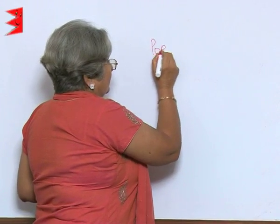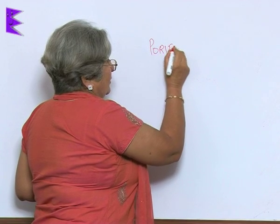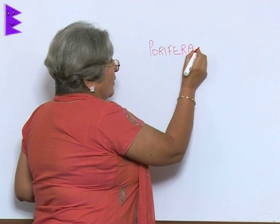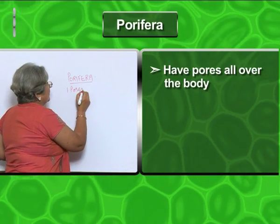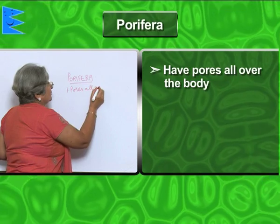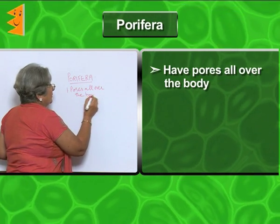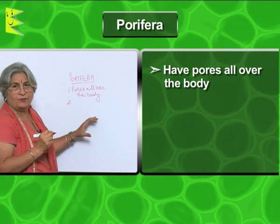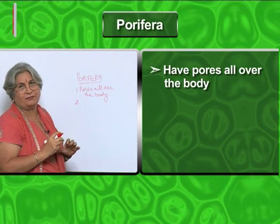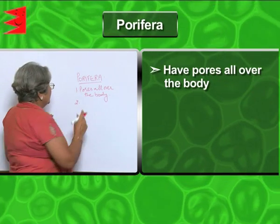Now the animals, the simplest phylum of the simplest animals is Porifera. Why this name Porifera? Because they have pores all over the body. Through these pores, water comes into the body and brings in food and oxygen.